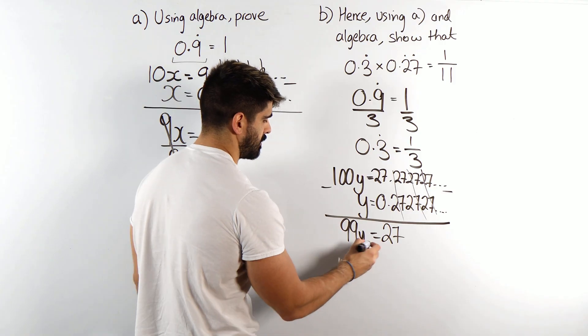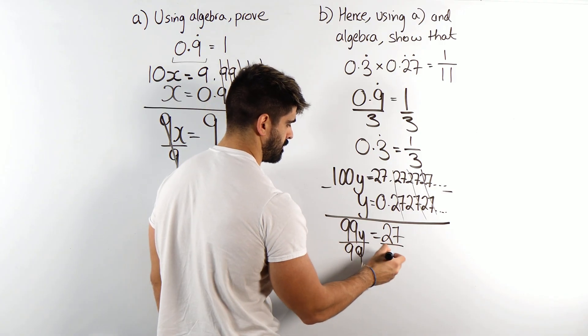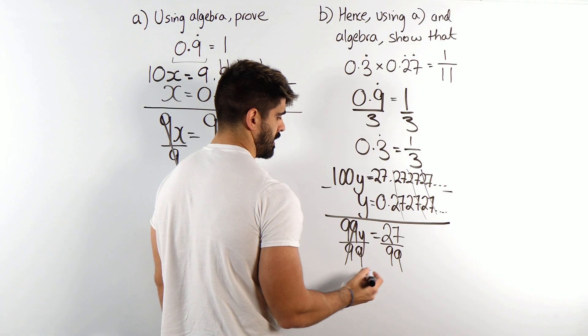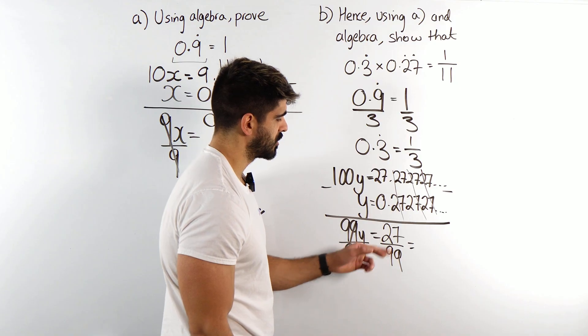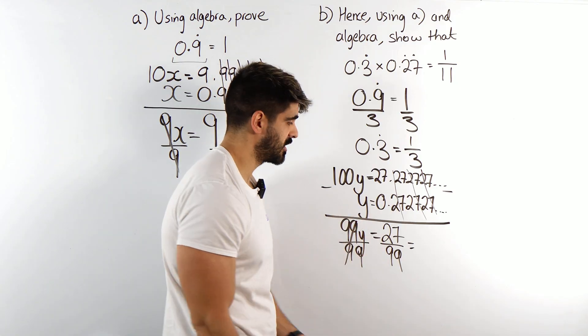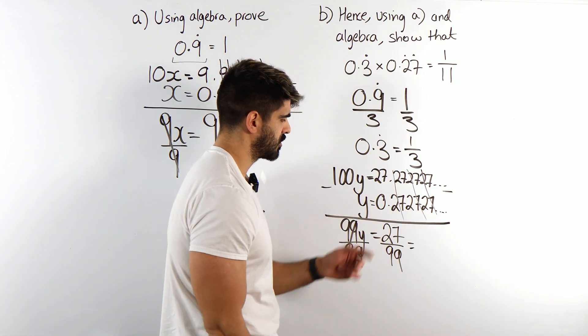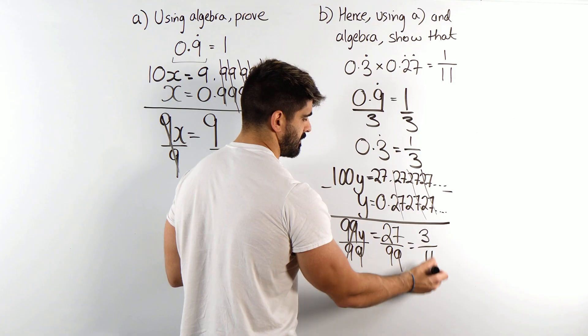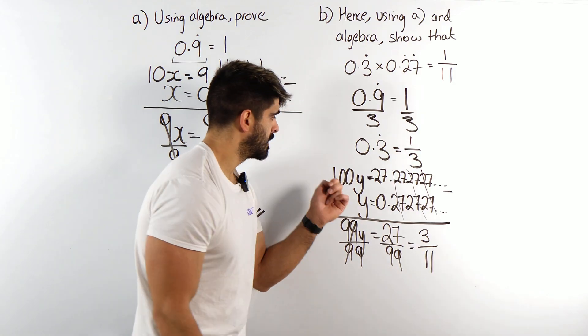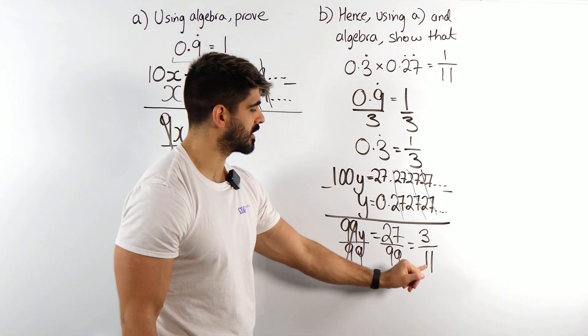Then we divide both sides by 99. Here, let's simplify at the same time. So I can divide top and bottom by 3. 27 by 9 even, actually. We'd simplify even quicker. 27 divided by 9 is 3. 99 divided by 3 is 11. Cool. So 0.27 recurring is 3 over 11.